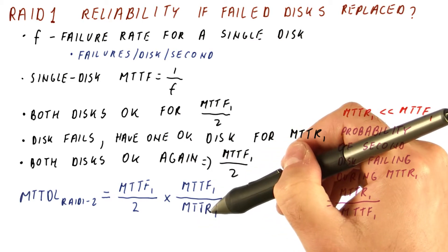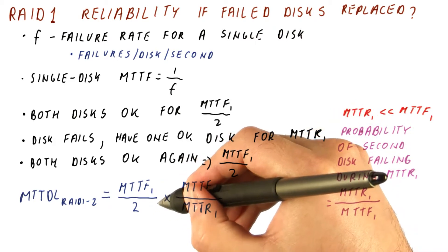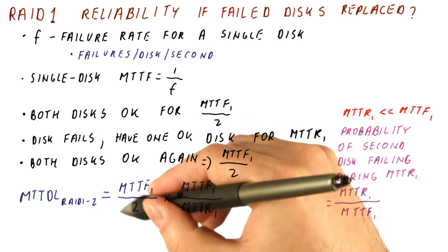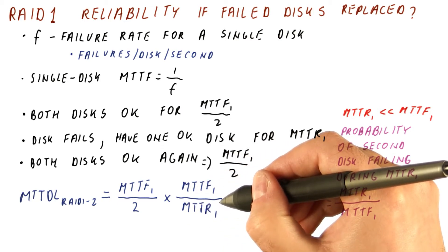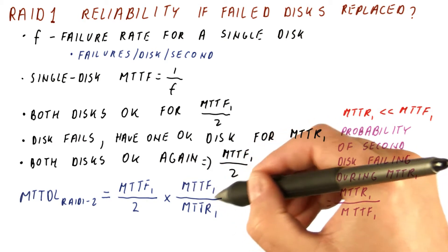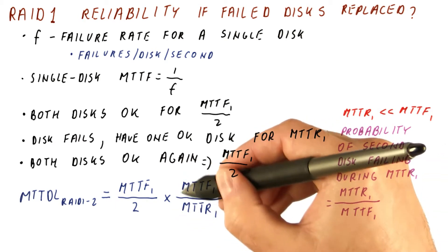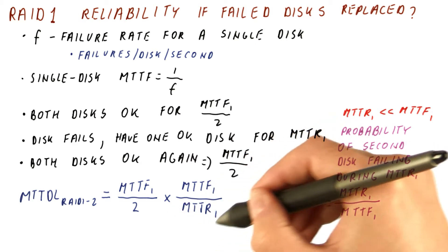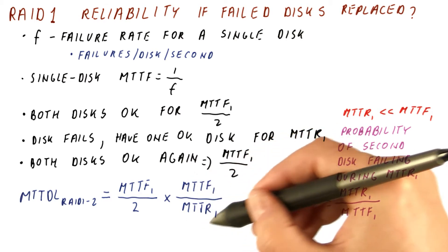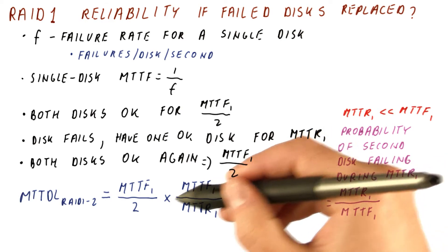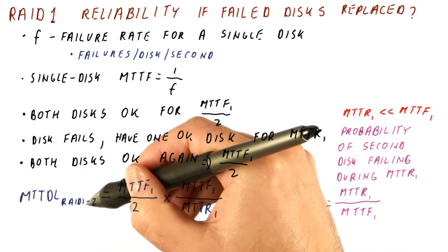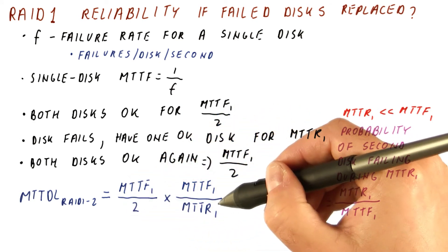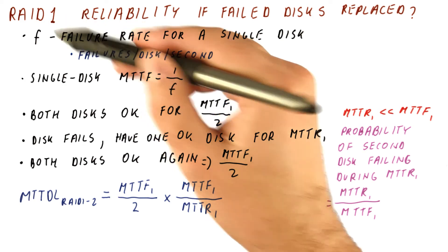This represents how long it takes to replace the disk and copy the data so we have a fully functional RAID 1 array again. And this is how many repair cycles we go through before we can expect the second disk — the one covering us during repair — to fail. Note that because MTTF is much larger than MTTR, measured in years usually, and MTTR is hopefully just hours or days, this factor is very, very large. We get many, many times the MTTF of a single disk over two, meaning RAID 1 is dramatically improving reliability compared to a single disk.